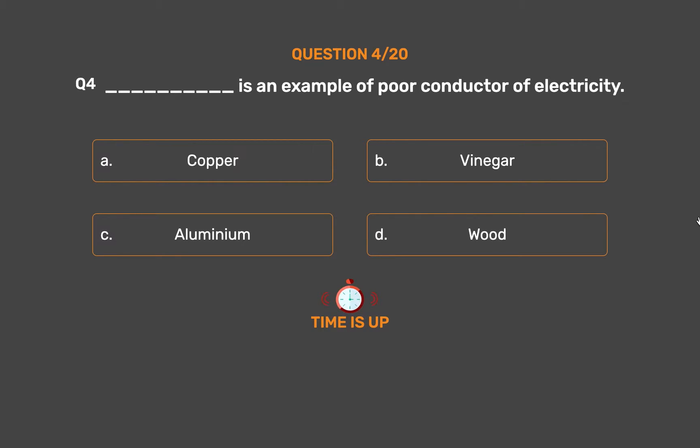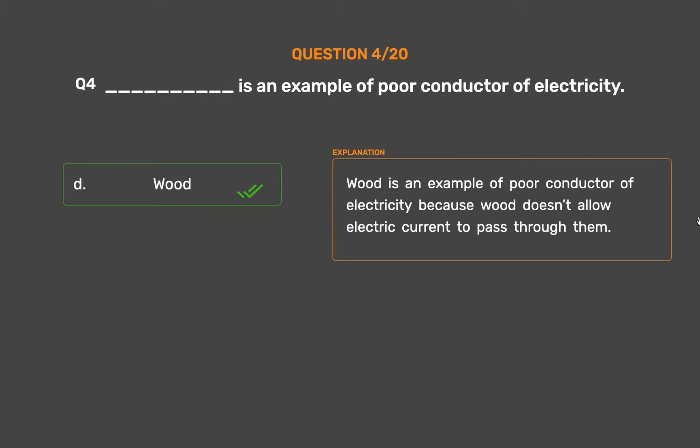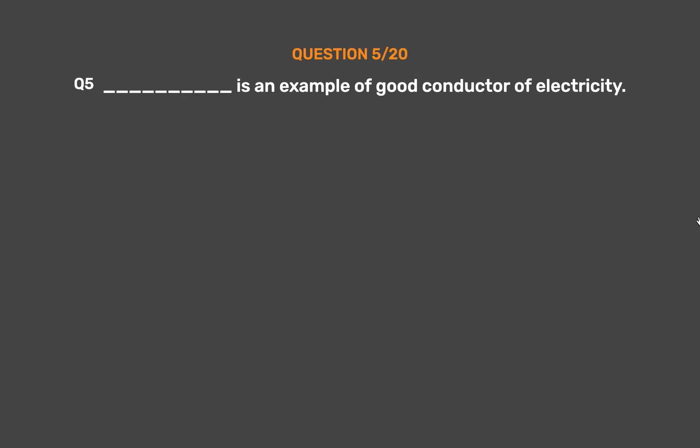The correct answer is Option D: Wood. Wood is an example of a poor conductor of electricity because wood doesn't allow electric current to pass through it.